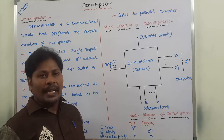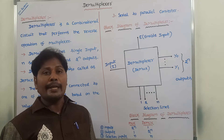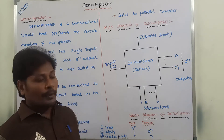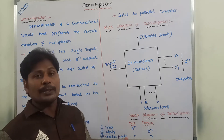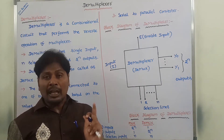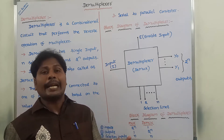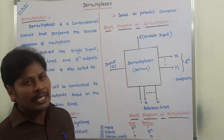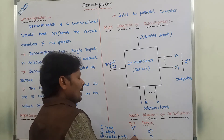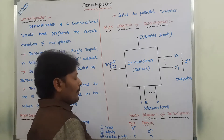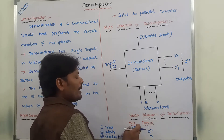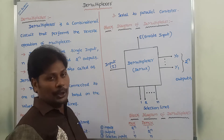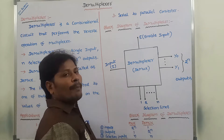A multiplexer is a combinational circuit that can take 2^n number of inputs and produce only one output. Among the 2^n number of inputs, we can select only one input. Whatever input is selected, that input is sent as the output by using n number of selection lines. By using those n selection lines, we select only one input, which is then connected to the output.